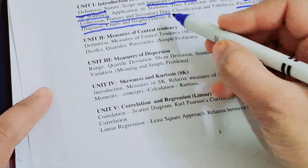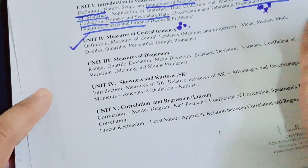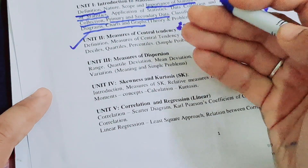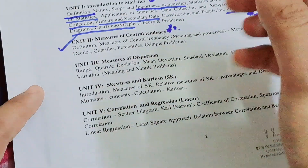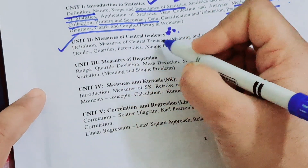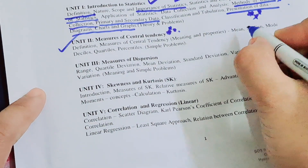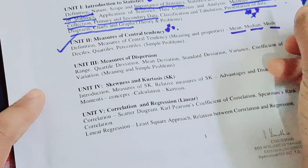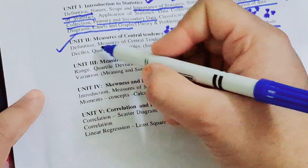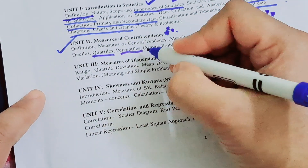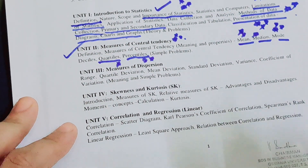Unit two is Measures of Central Tendency, which is a very important chapter. It covers mean, median, mode, quartile, percentile, decile, and octile. No need to learn much theory from this unit — concentrate on practical problems. If you have less time, learn mode first, then mean, then median. Quartiles and percentiles are important for short answers.